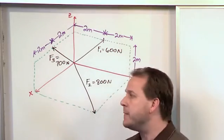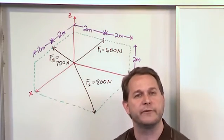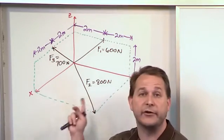I, J, K. And then we want to do the same thing for this vector and the same thing for this vector, get them all in terms of I, J, K. And we're trying to find the resultant.